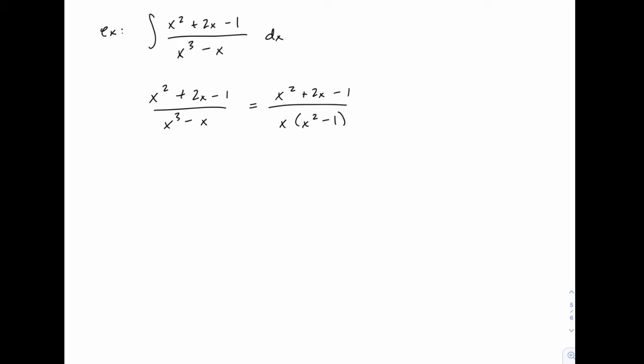This leaves x times x squared minus 1, and then x squared minus 1 can be further factored. Either you could recognize that as the difference of squares, or you could think about what two values multiply to negative 1 and add up to 0 so that there's no x term.